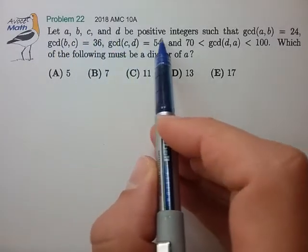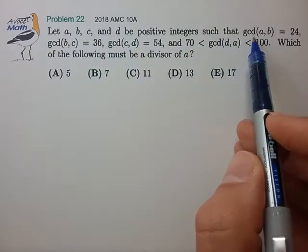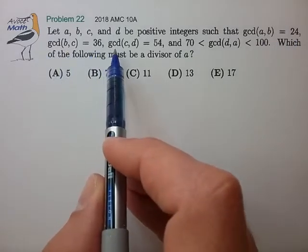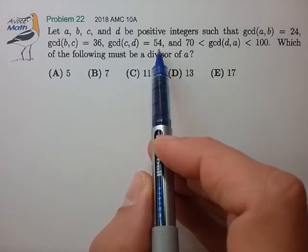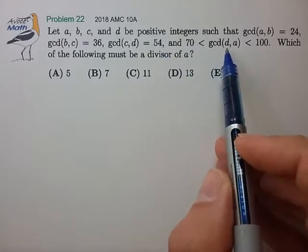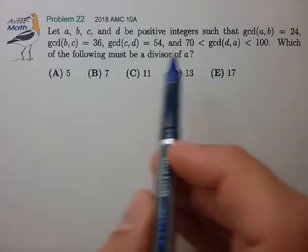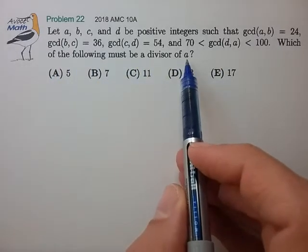Let A, B, C, and D be positive integers such that the greatest common divisor of A and B is 24, GCD of B and C is 36, GCD of C and D is 54, and the GCD of D and A lies in the range of 70 to 100. Which of the following must be a divisor of A?